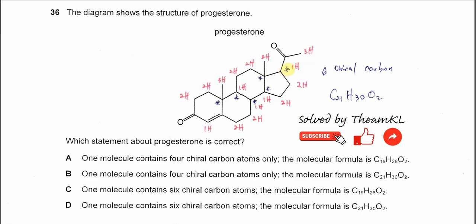So it will be one, two, three, four, five, six - six chiral carbons. So the answer is C or D.